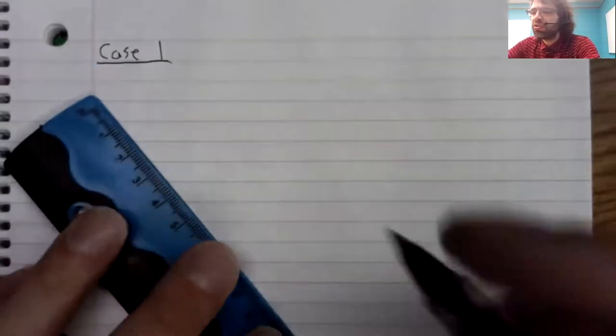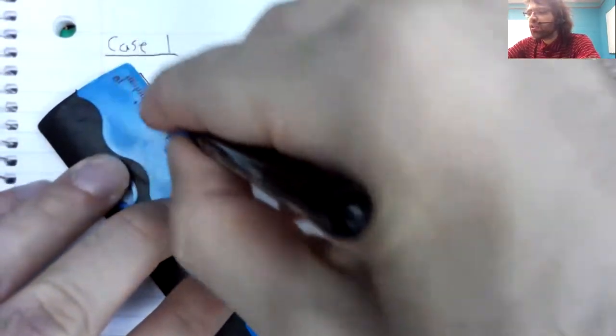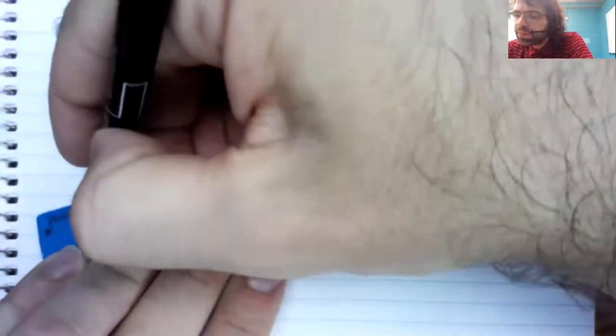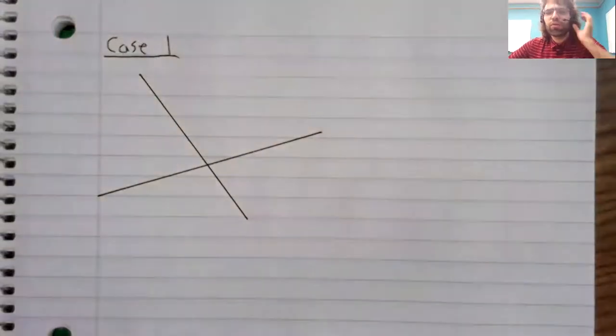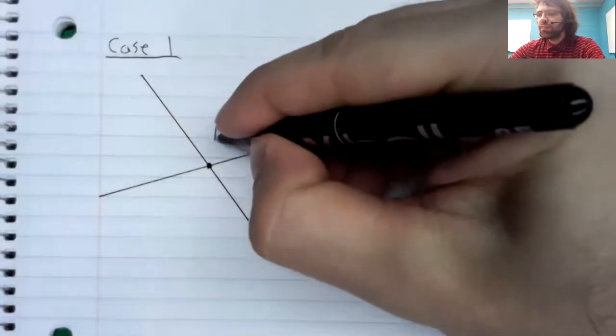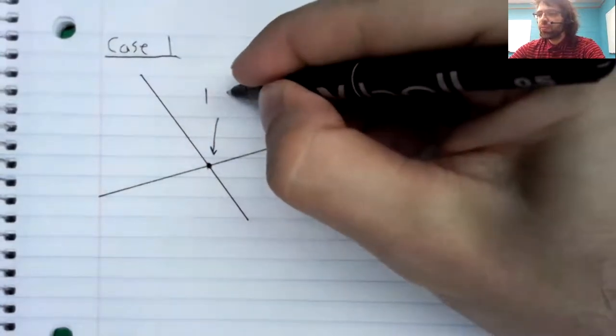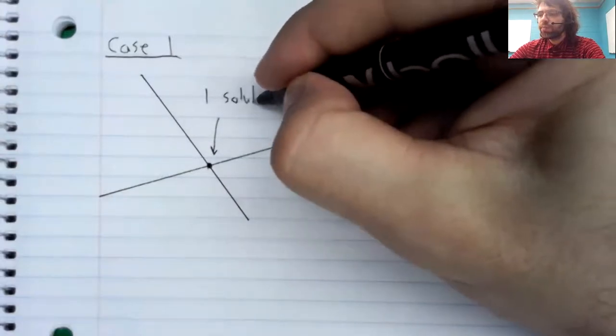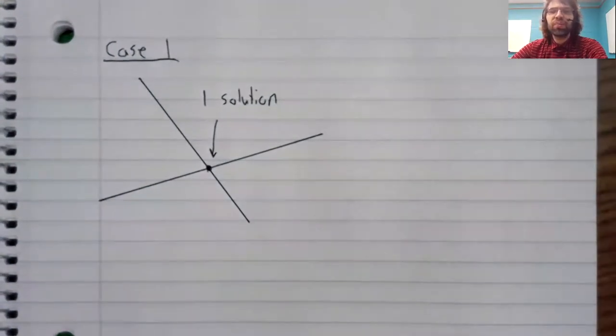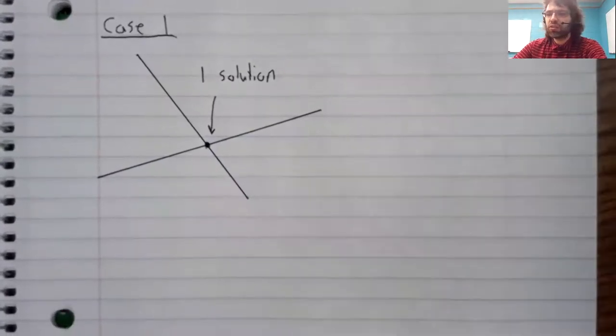There are, it turns out, only three cases. So the first case, let's say here's one of the lines, and there's the other line. We look at this graph and we see that there is one solution. So that's a possible situation. A system might have exactly one solution.